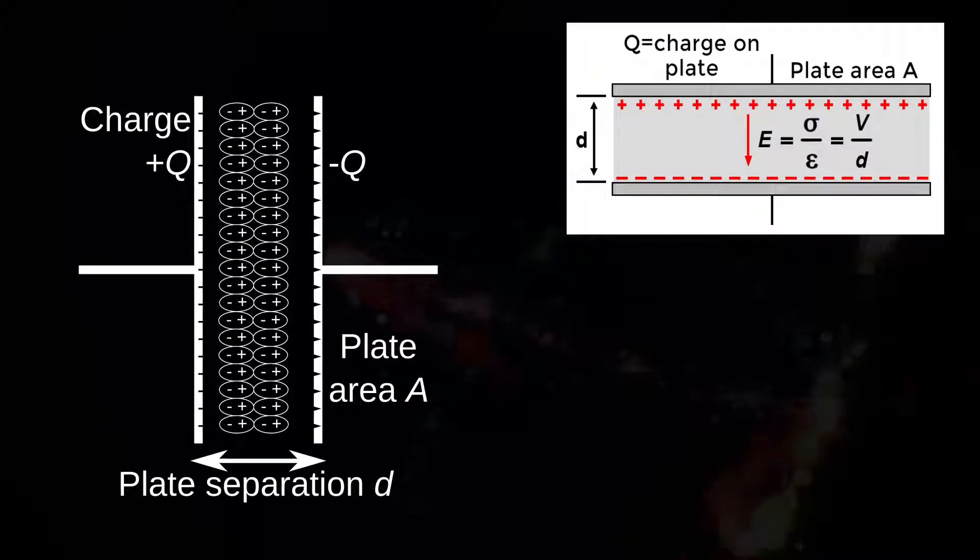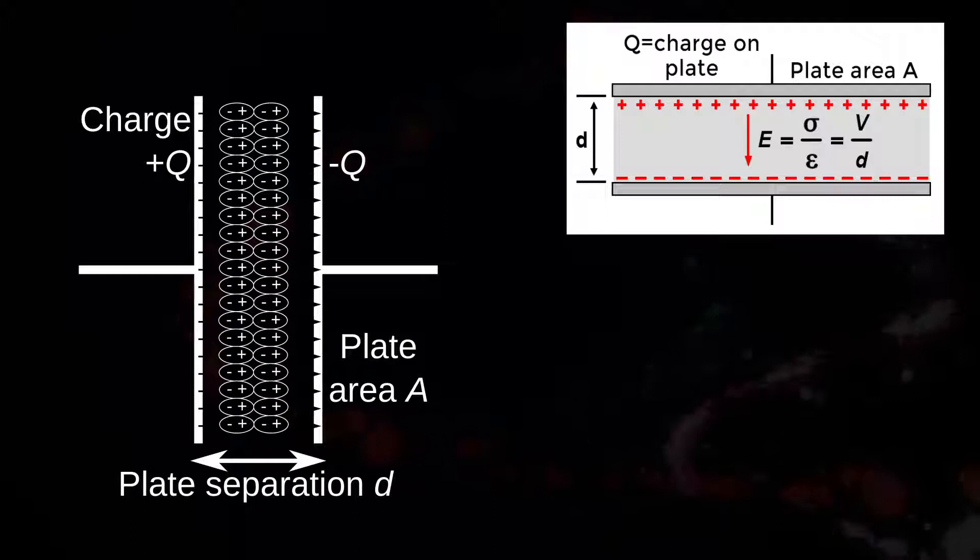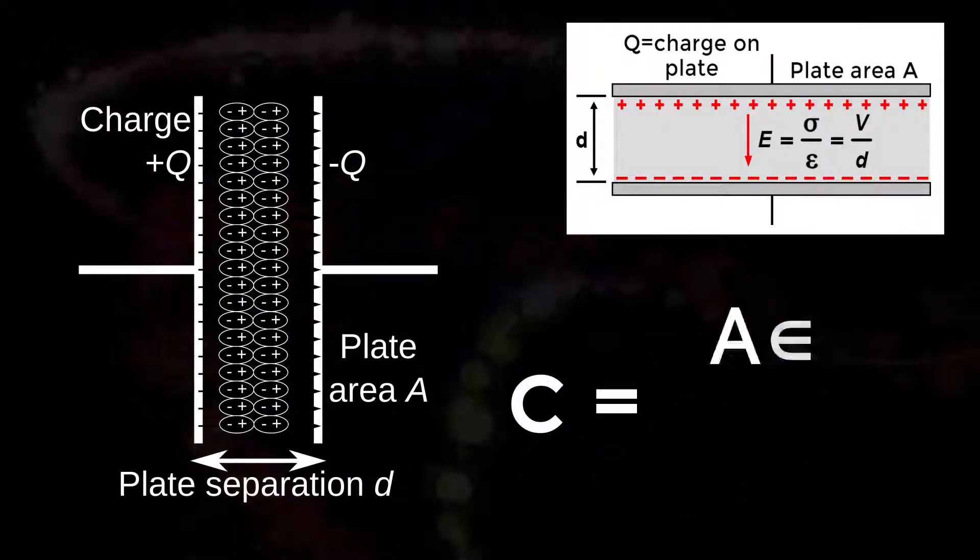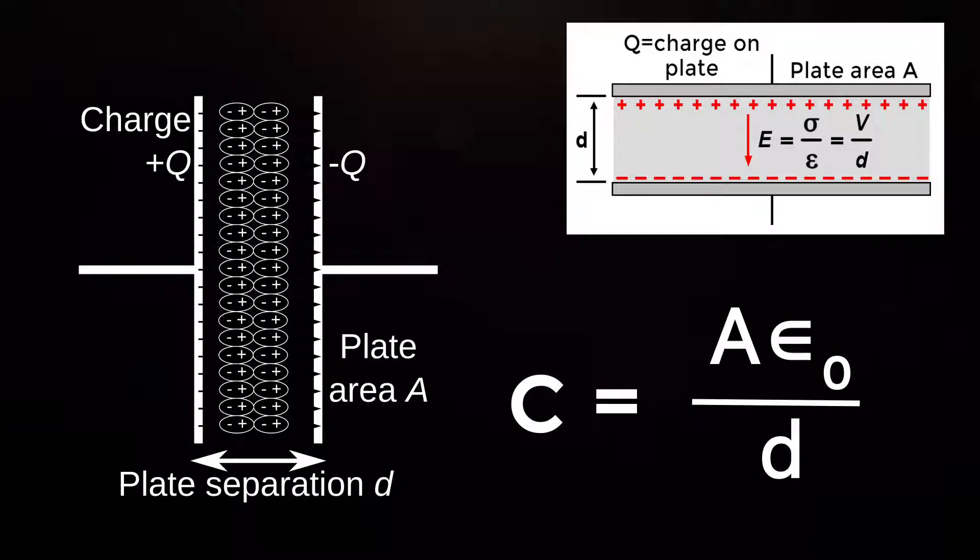If the space between the plates is filled with dielectric medium of relative permittivity epsilon R, then C is equal to A epsilon naught divided by D.